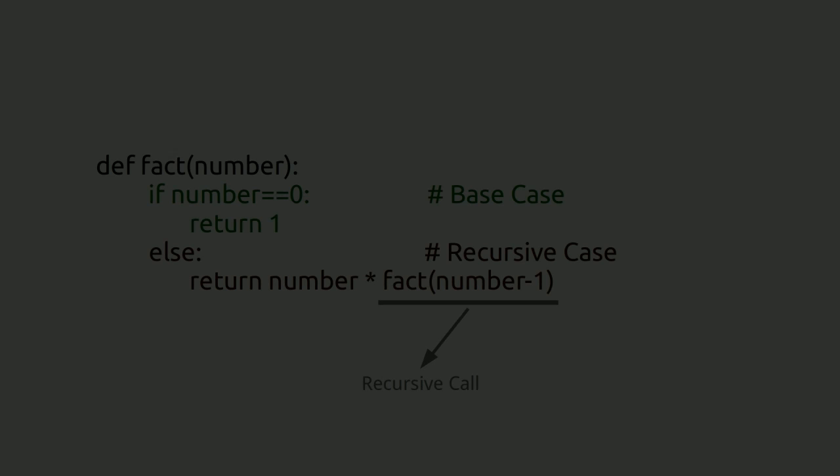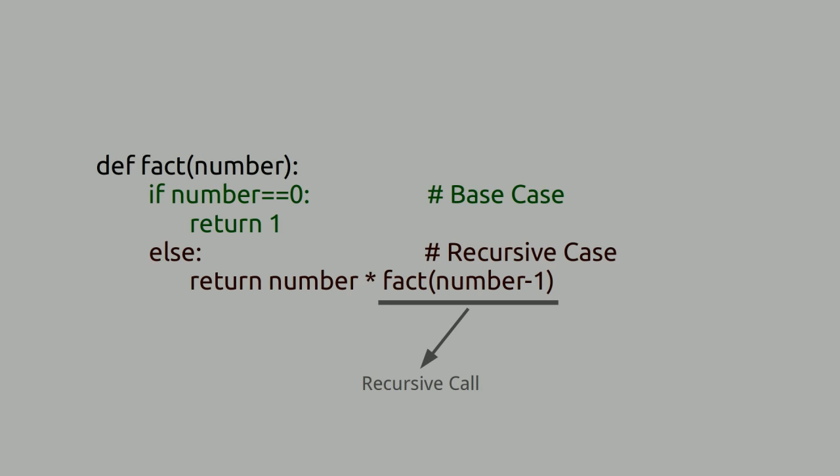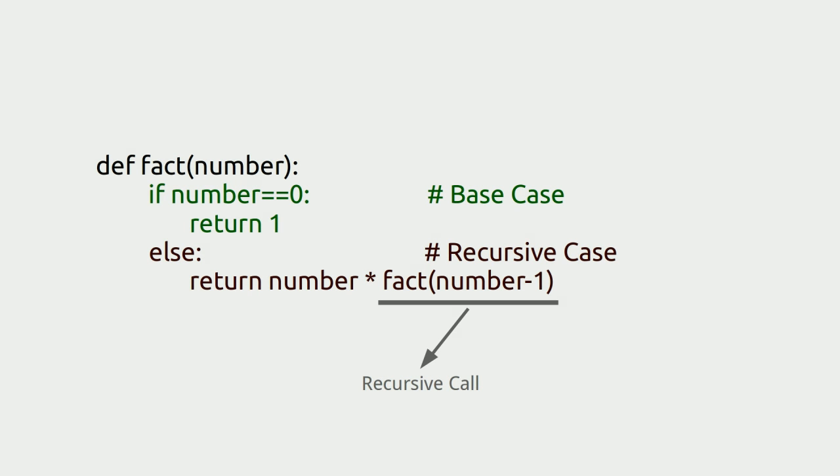The if part in this function is the base case. The else part is the recursive case. fact(number minus one) is the recursive function call.